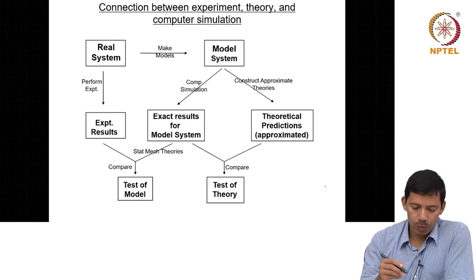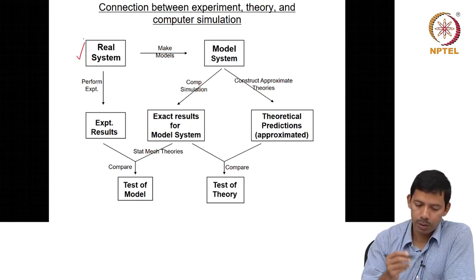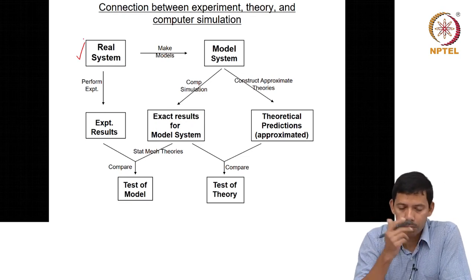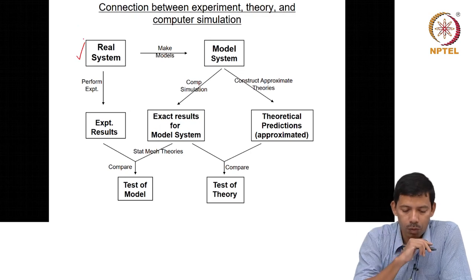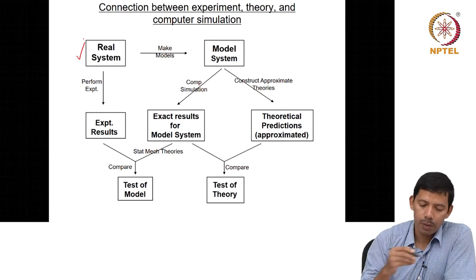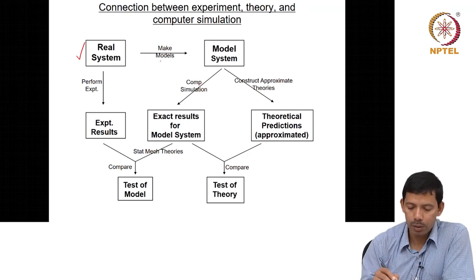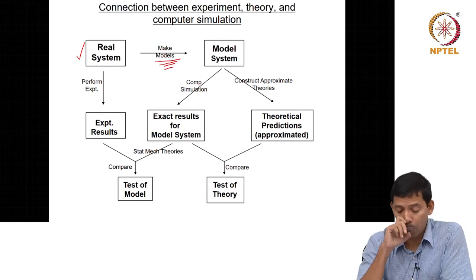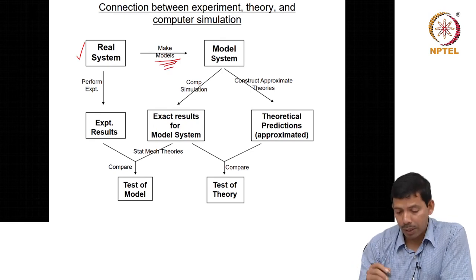Let us say we have a real system. This real system could be a biological system, a liquid system, or anything of your interest. You start from this real system and, starting from it, you make a model — you make a model to obtain a model system.